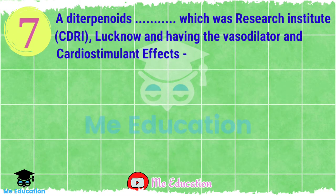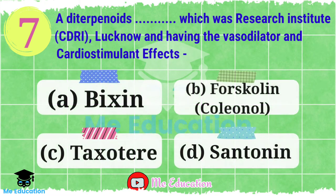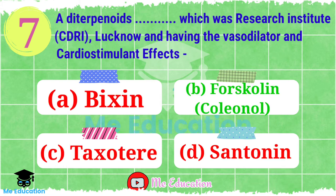Question number 7: A diterpenoid from CDRI (Central Drug Research Institute) Lucknow having vasodilator and cardiostimulant effect — Option A: bixin; Option B: forskolin; Option C: taxotere; Option D: centonine. Pause the video and try to answer this question. The right answer is Option B, forskolin.